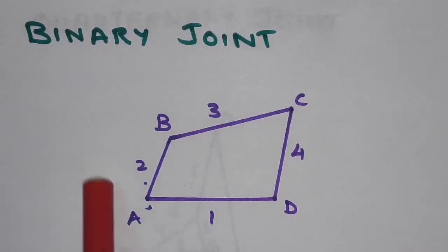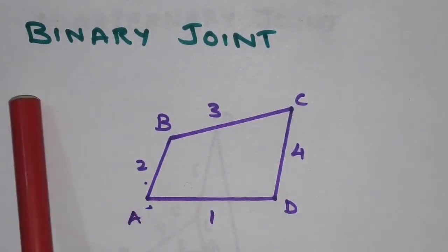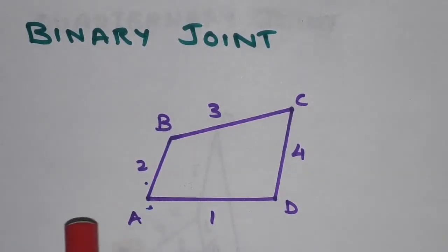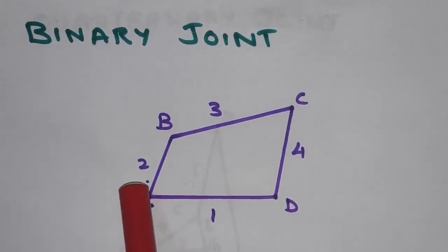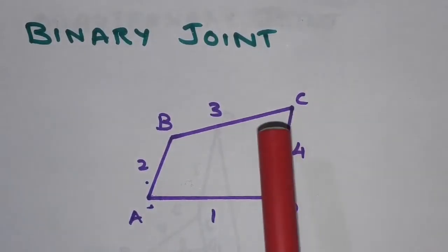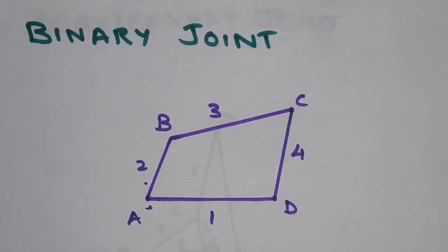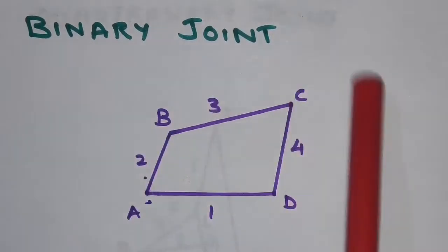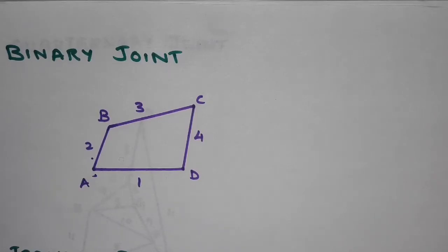The binary joint comprises a point or joint where two links join together. Here we have four joints: A, B, C, and D. Joint A is formed by joining link number one and two, B by links two and three, C by links three and four, and D by links four and one. These are all known as binary joints.